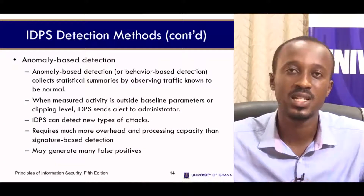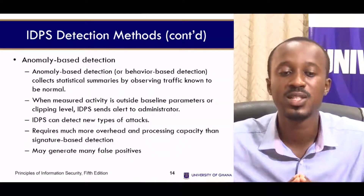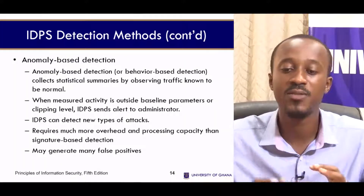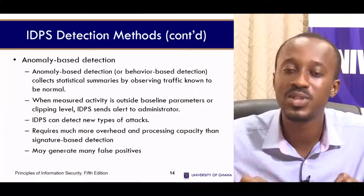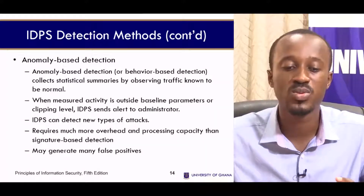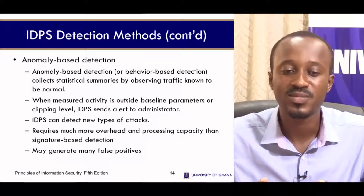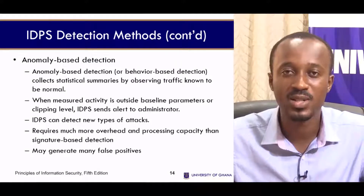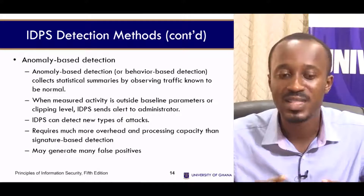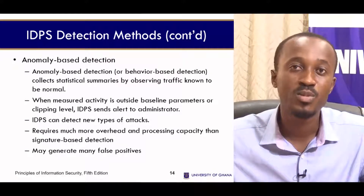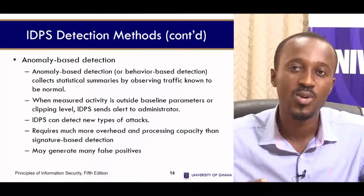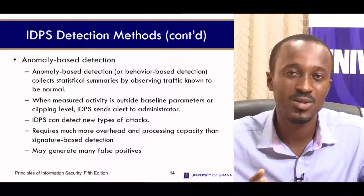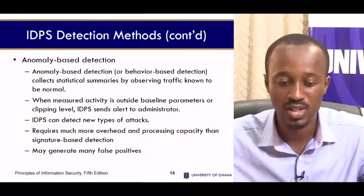The second detection method is the anomaly-based, or behavior-based, detection. It collects statistical summaries by observing traffic known to be normal. Any traffic that exhibits abnormal behavior is flagged, grouped, and studied so that in future, similar abnormal traffic can be identified and blocked.